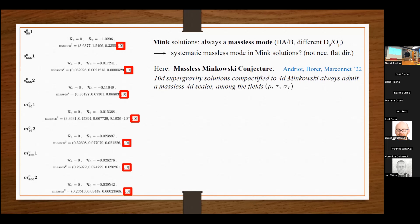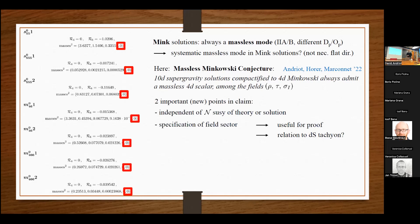We have this conjecture: if you take a 10D supergravity solution which has a 4D Minkowski compactification to 4D Minkowski, there's always a 4D massless scalar among these fields. The fields in question are: the overall volume, the dilaton, and the volumes wrapped by the orientifolds and D-branes. We think it's a mixture of these guys, and you need all of them, but beyond this we don't know. Two important points: first, this claim is independent of supersymmetry; second, we specify which field sector to look at, which could help if you want to prove this.